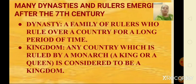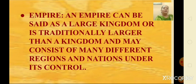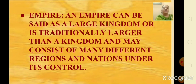After gaining power and wealth gradually, the samantas declared themselves as the Mahasamanta or Mahamandaleshwara. Mahamandaleshwara means the great lord of a circle or a region. Sometimes they rejected the supremacy of the existing king and asserted their independence. An empire is traditionally larger than a kingdom and may consist of different regions or nations under its control.